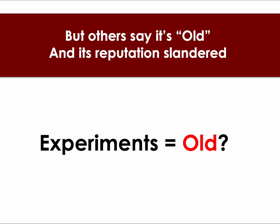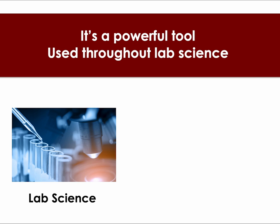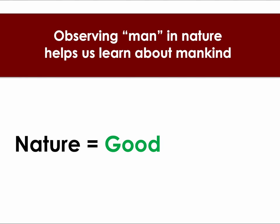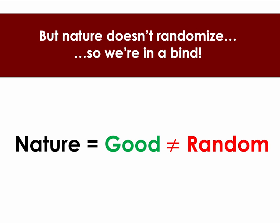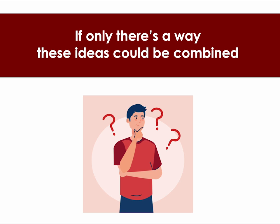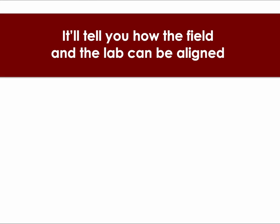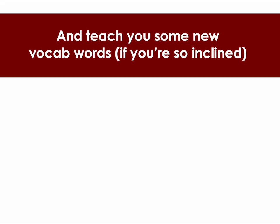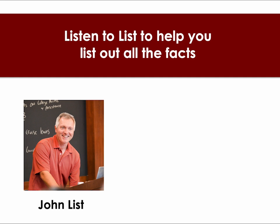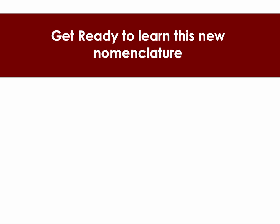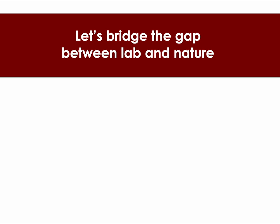This is called an experiment — some say the gold standard — but others say it's old and its reputation's slandered. It's a powerful tool used throughout lab science, but for social problems there might be too much lab reliance. Observing man and nature helps us learn about mankind, but nature doesn't randomize, so we're in a bind. If only there's a way these ideas could be combined — well you're in luck since this rap is of that mind. It'll tell you how the field and the lab can be aligned, and teach you some new vocab words if you're so inclined. Get ready to learn this new nomenclature — let's bridge the gap between lab and nature.